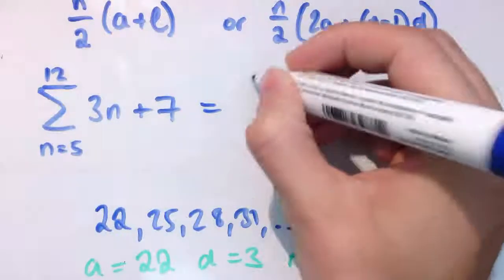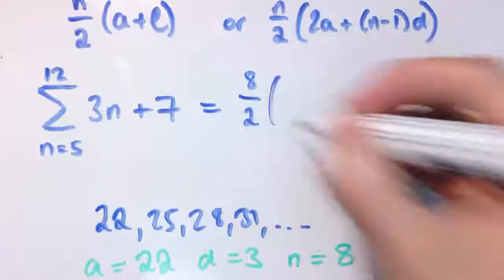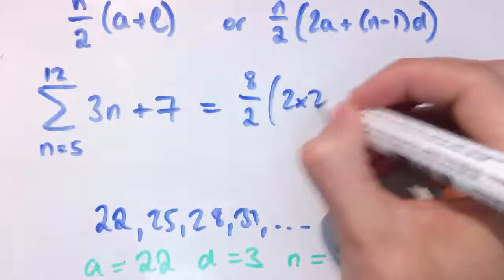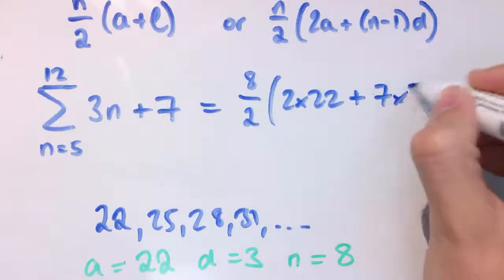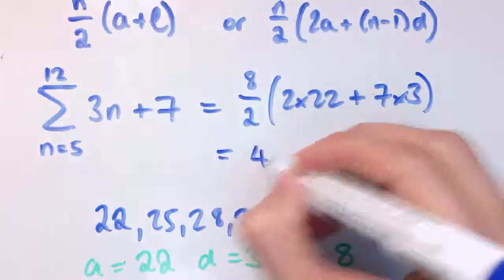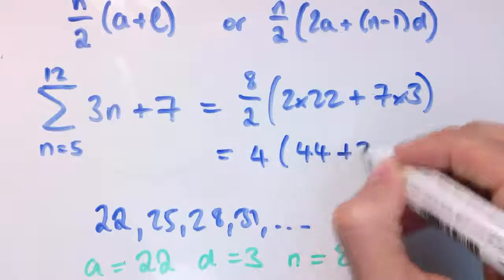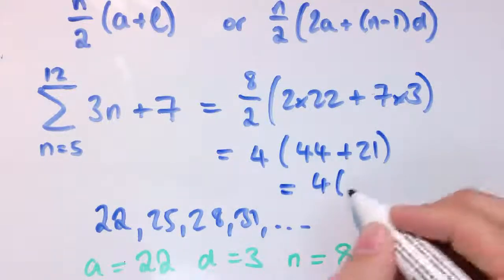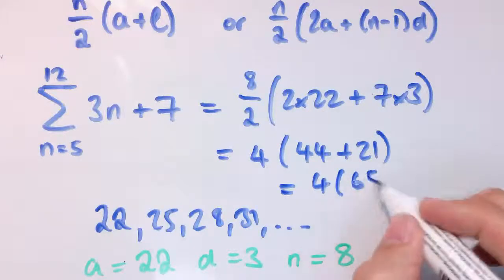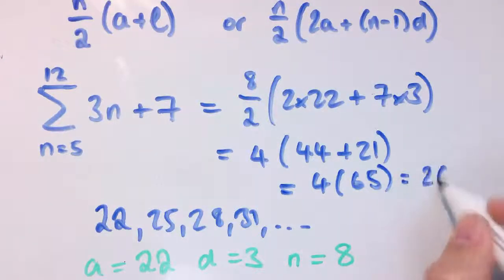So we plug all of these then into the formula for the sum of an arithmetic progression. And we get 8 over 2 times 2 times 22, that's 2a, plus n minus 1 is 7 times 3. So I've got 4 times 44 plus 21, which is 4 times 65, which is 260.